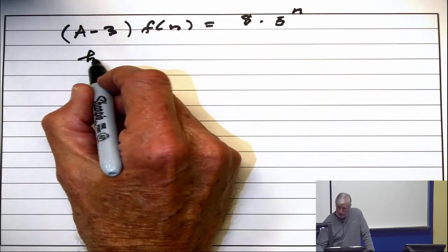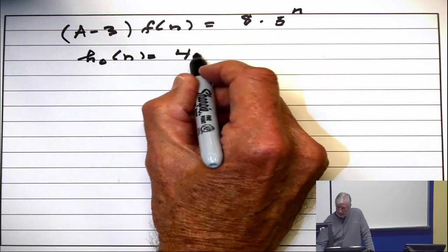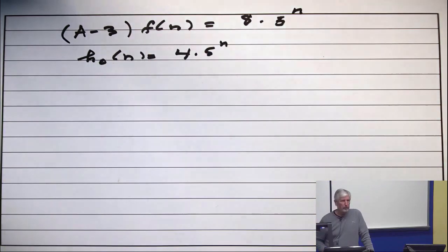All right, so I want to look at the function h₀(n) = 4(5)^n, and I claim if I put that in there, I get 8(5)^n. You check that out, see if I did it right.